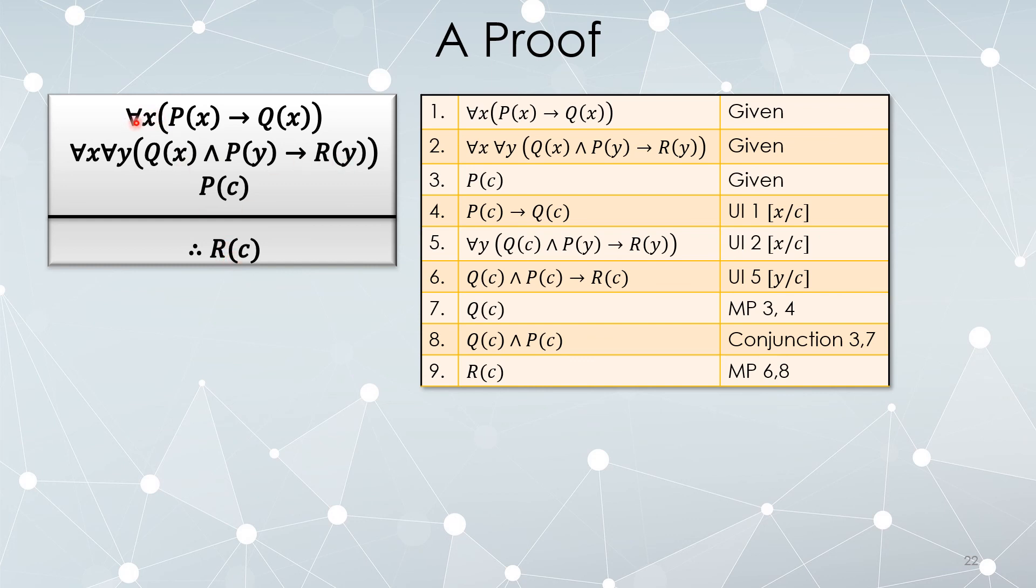Any time you have an x, if P is true, then Q is true. If you have a choice of x and y so that Q and P are both true, then R must be true. C is a specific choice so that P is true.